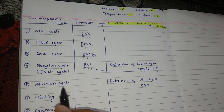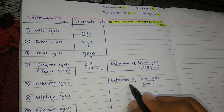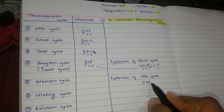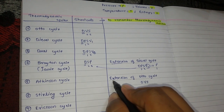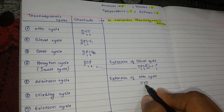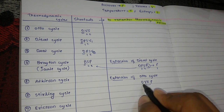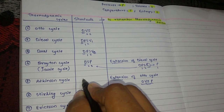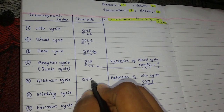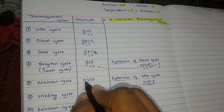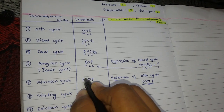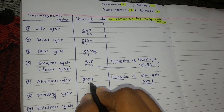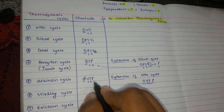Fifth is Atkinson cycle. Atkinson is also an extension of the Otto cycle, whose shortcut is OVS. Because it is an extension, we convert one volume to one pressure, giving us OVSP. The O is cut since it is an extension of Otto, leaving one constant volume, two constant entropy, and one constant pressure process.